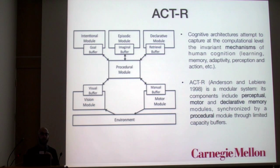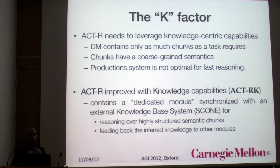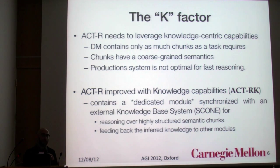In ACT-R, knowledge is something opaque — there is no particular focus on knowledge besides the fact that there is a declarative module that can be enriched and populated. ACT-R needs to leverage knowledge-centric capabilities. The declarative memory usually contains only as many chunks as a task requires, and the semantics of chunks in ACT-R are really coarse-grained, so you cannot represent much information there. The production system, even though you can use it for reasoning, is not optimal for fast reasoning.